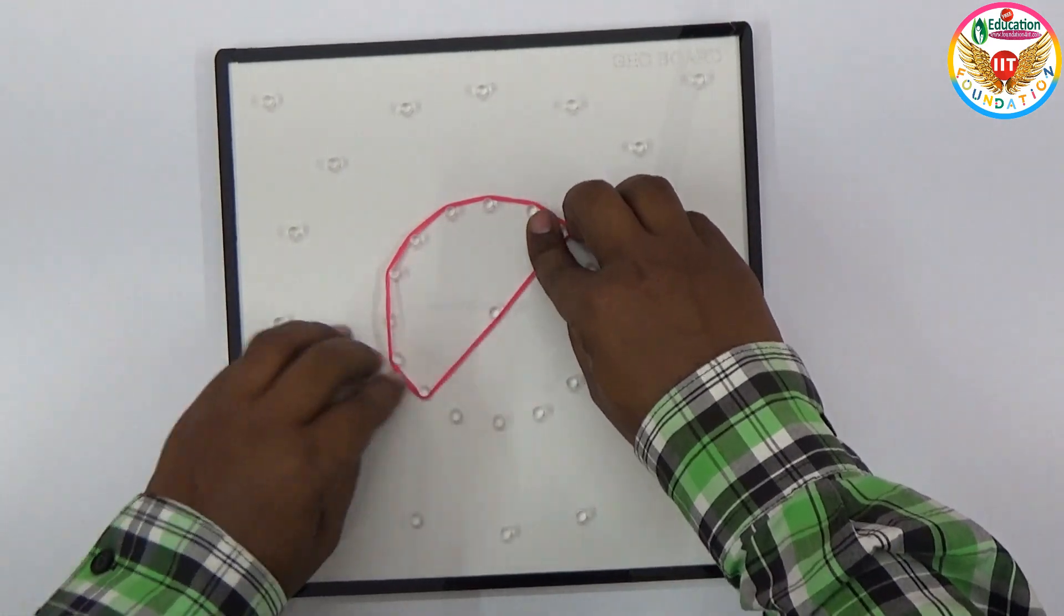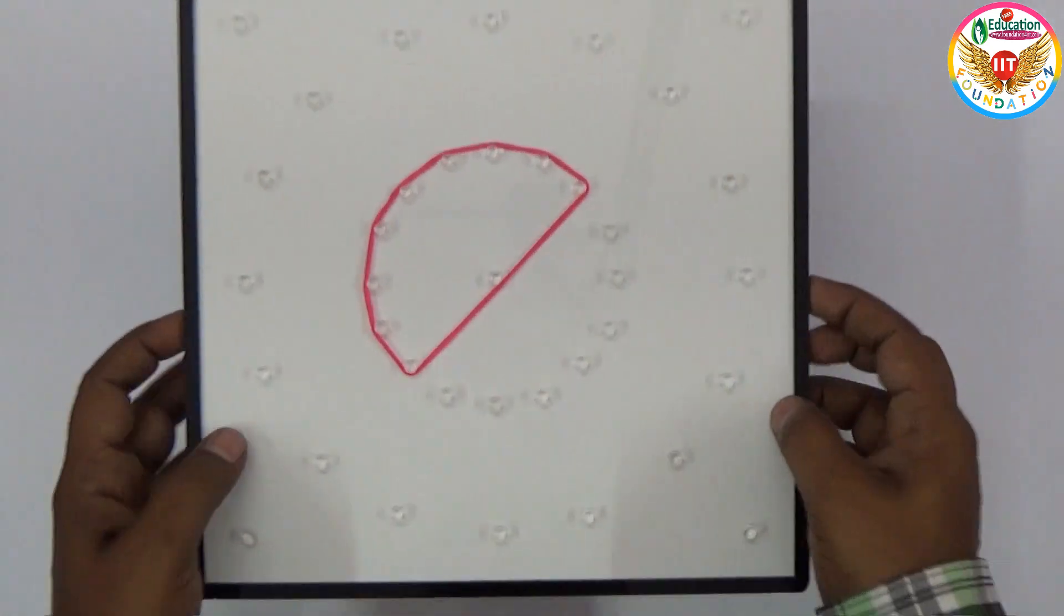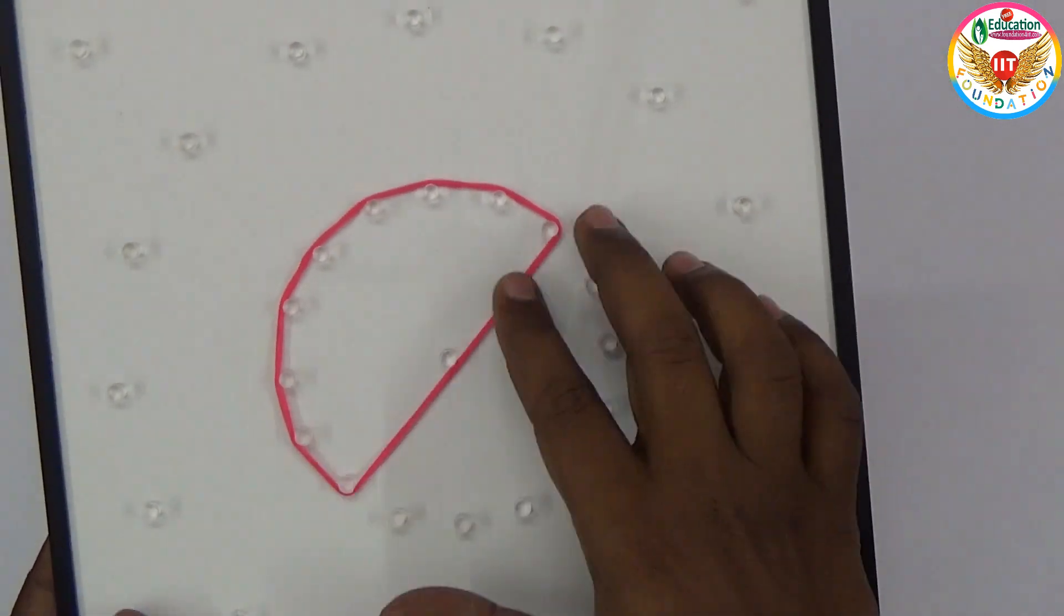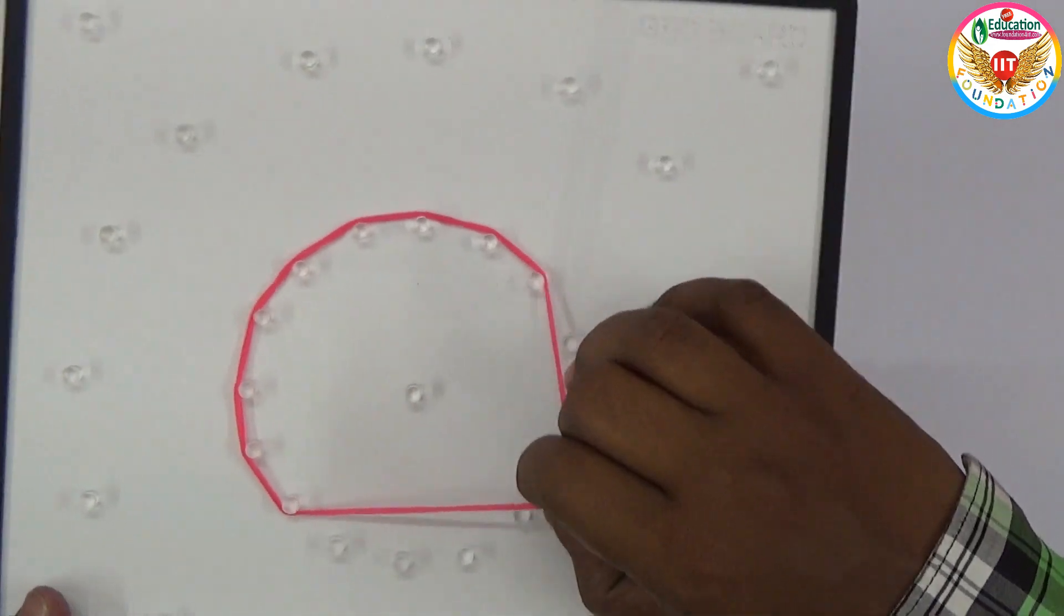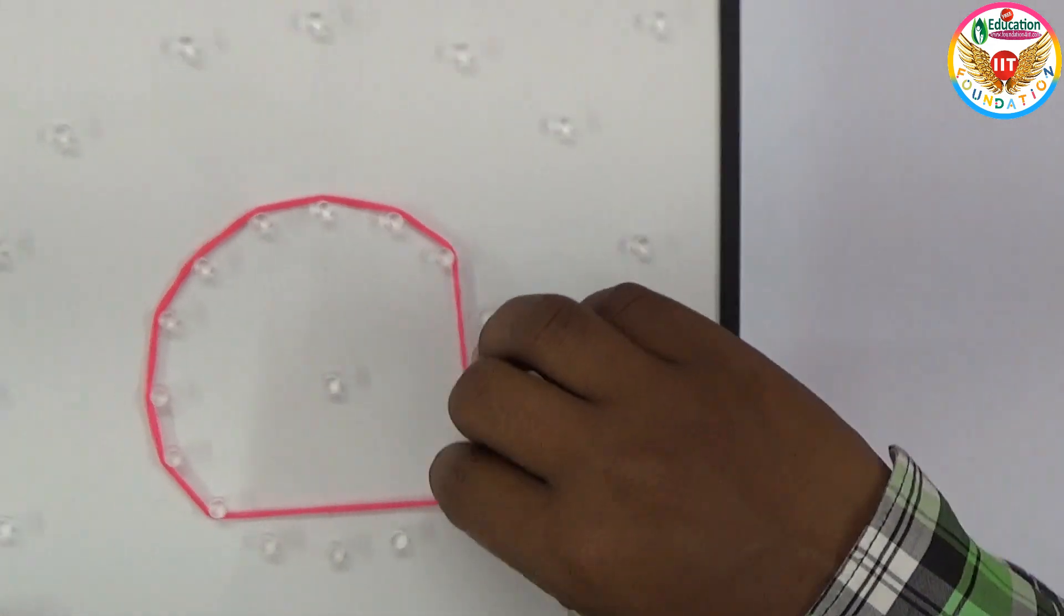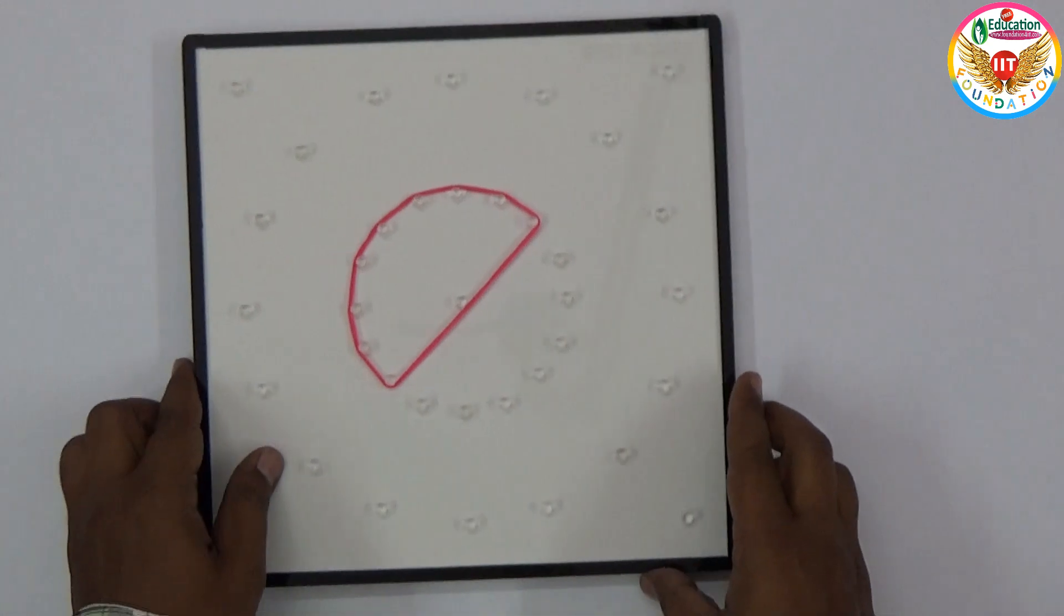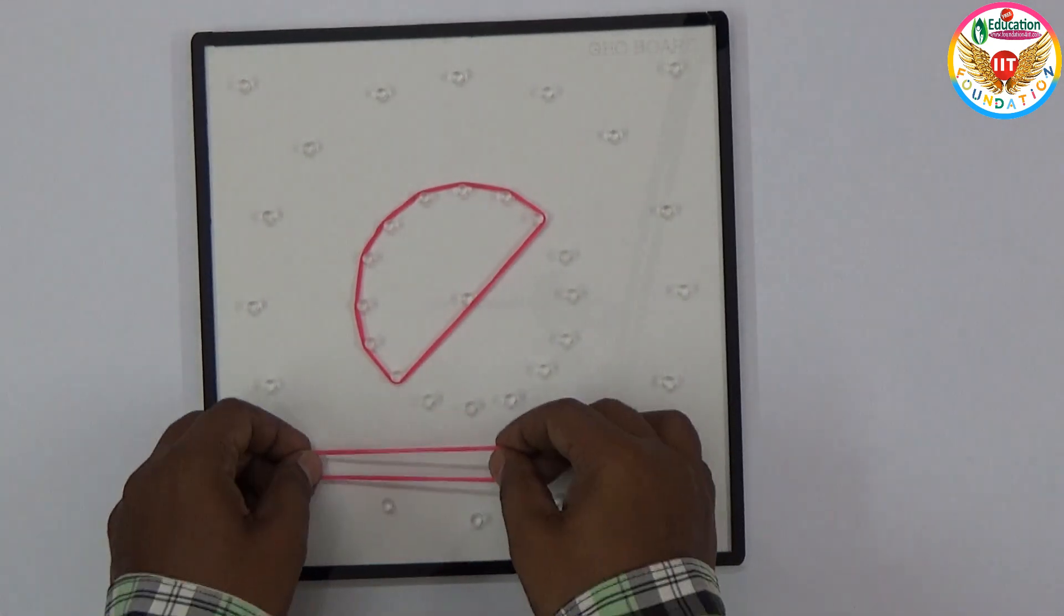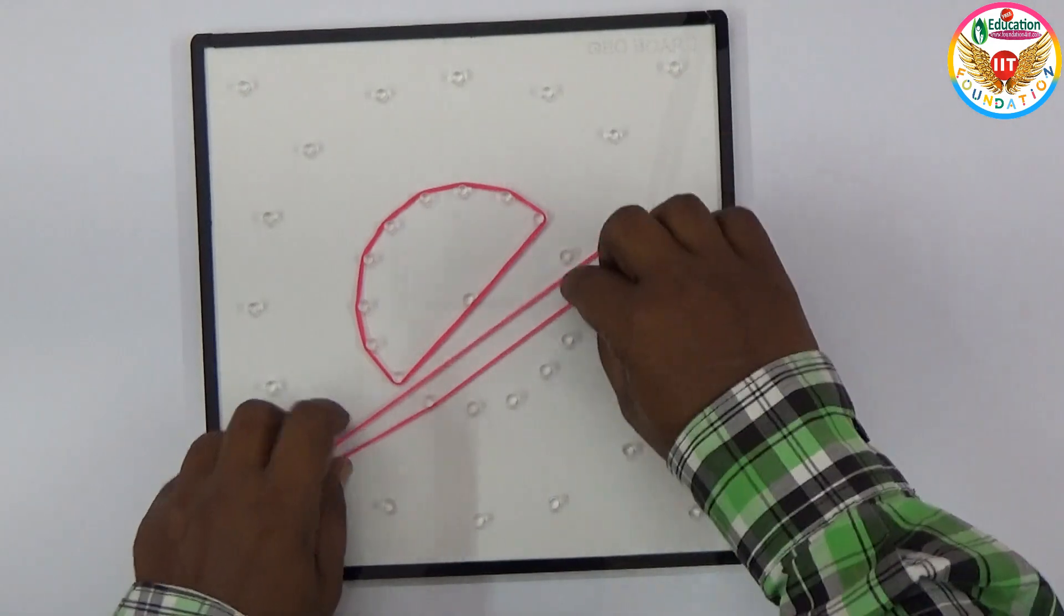You can use the protractor to show the angle by making a segment and sector. Not only that, you can demonstrate the tangent, secant, and chord.